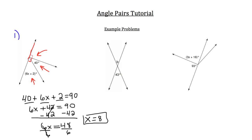Now let's take a look at example 2. What do you notice about angle b and the 43 degree angle? Together they make a vertical pair — they're vertical angles because these two lines are intersecting, and the angles opposite that intersection are congruent to each other. So b must be equal to 43 degrees because of vertical angles.